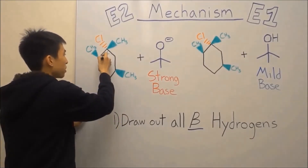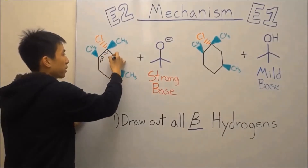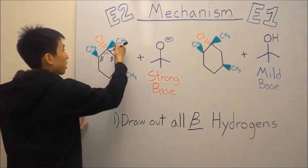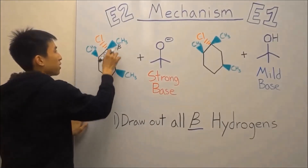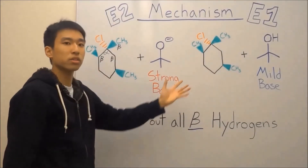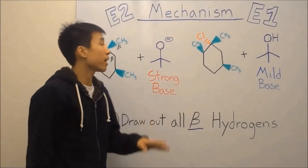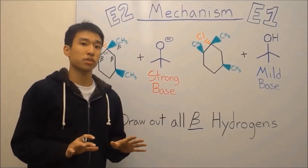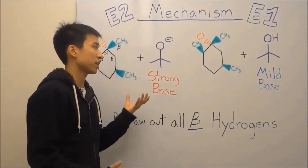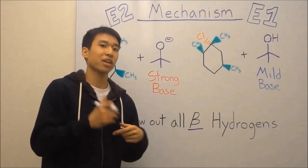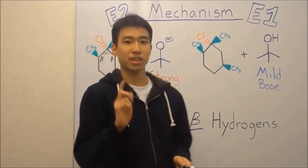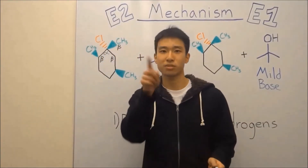Your beta carbon is going to be the next carbon that's one carbon away from your alpha carbon. So you have one beta carbon over here, one beta carbon over here, and one more beta carbon up here — because they're all one bond away from your alpha carbon. The same is true for this molecule over here. Take a second and draw out all your beta hydrogens first, because that's what your strong base or mild base are going to be reacting with. Remember, bases grab protons or hydrogens. Pause the video.